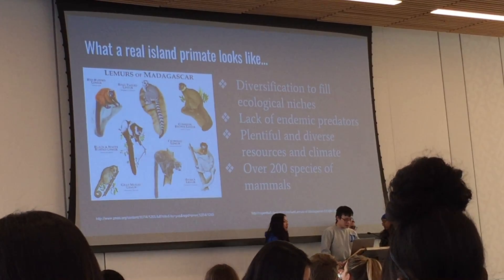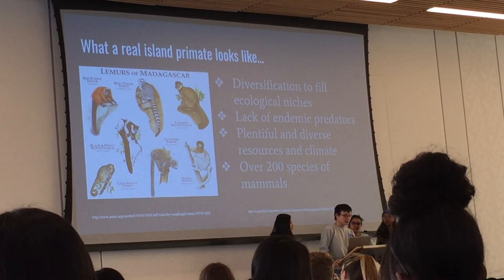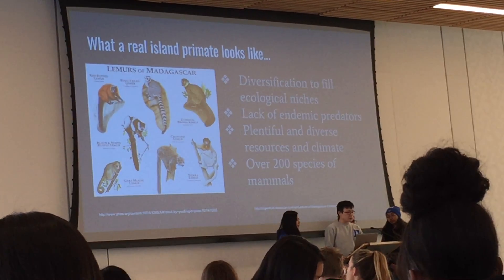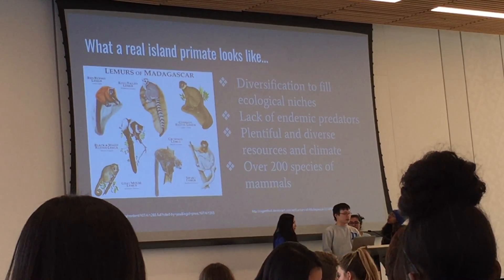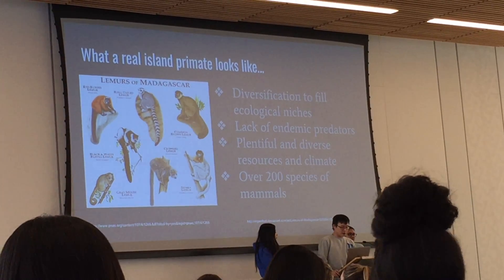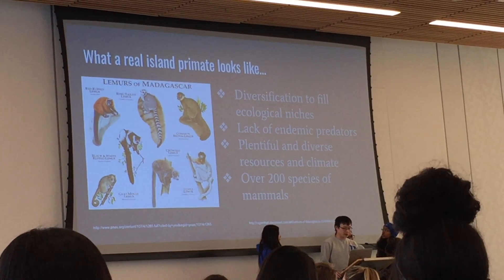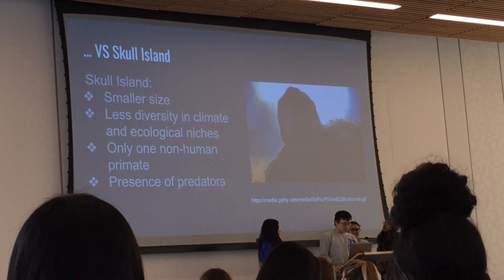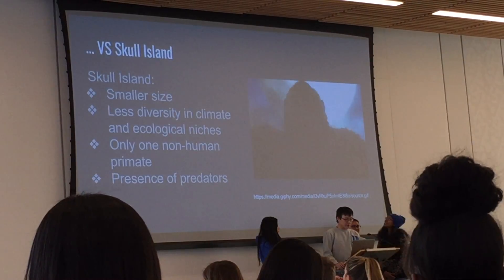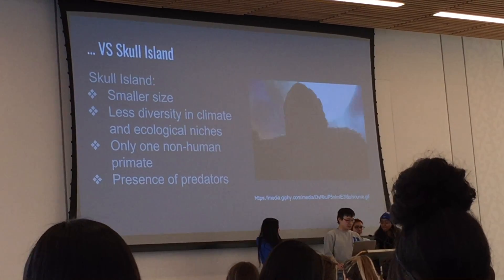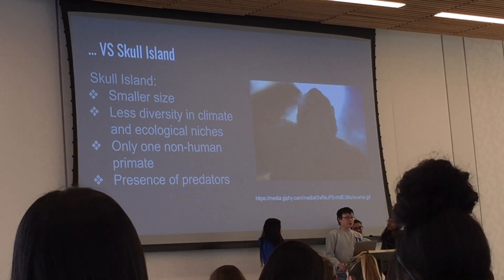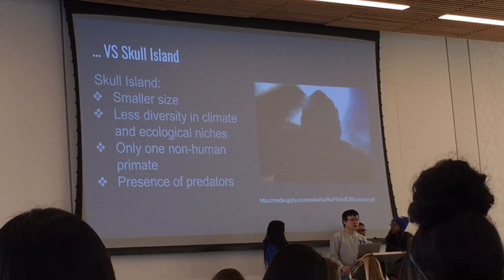Due to the large diversity of ecological niches on Madagascar, when lemurs first arrived they were able to adapt to each niche. With a lack of predators they diversified into many species — a large portion of the over 200 species of mammals found on Madagascar are lemurs. On Skull Island, the smaller size means far fewer diverse environments to adapt to, and there's also a high presence of predators, resulting in much more limited species diversity — hence why there's only one Kong on the island.